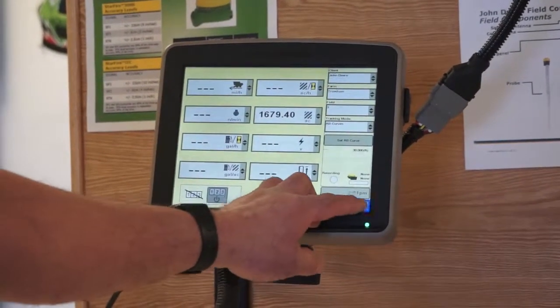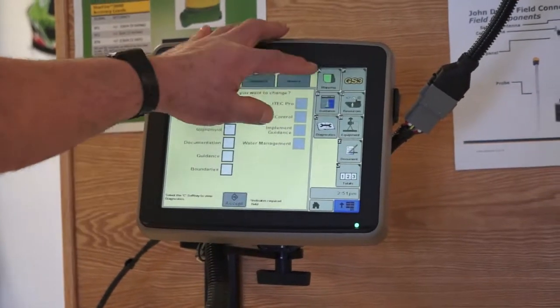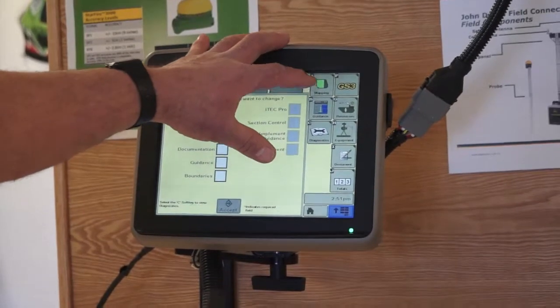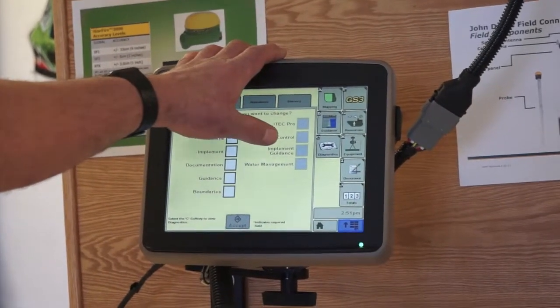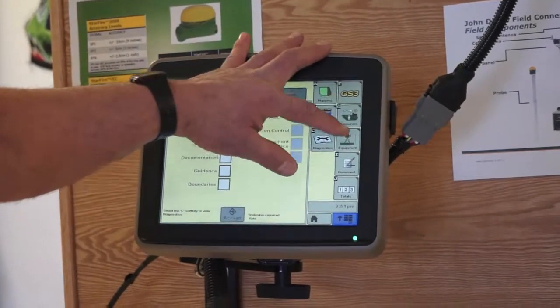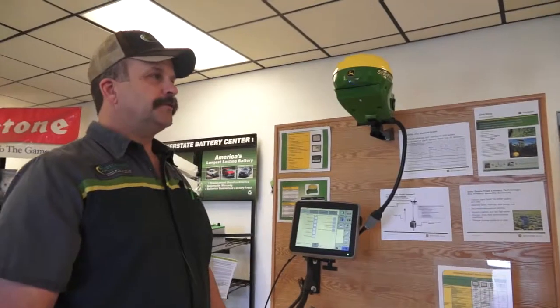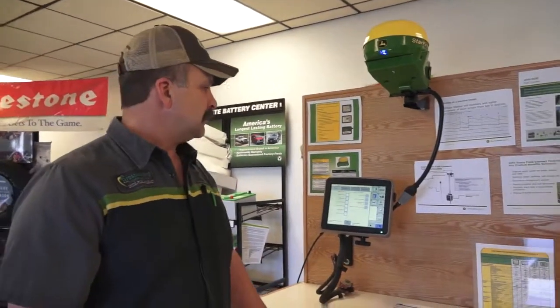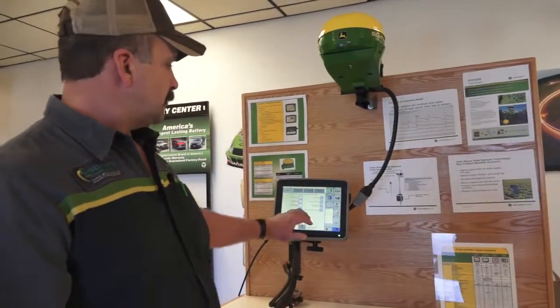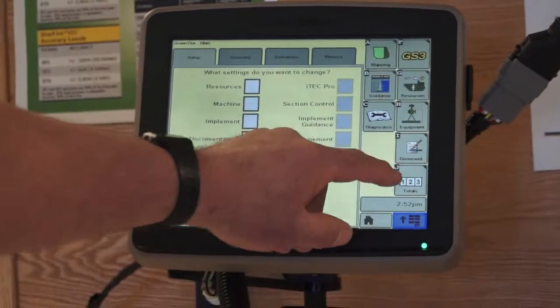I went through that pretty quick, but going back to our menu and GreenStar 3, most common problems come back to documentation. My display, when I put my planter in ground yesterday, painted the screen, my documentation worked, but it will not work today. What is wrong? Commonly it's going to be under your resources, equipment, or documentation.